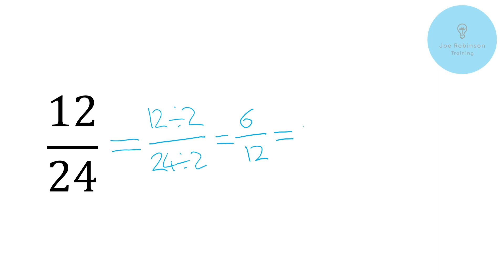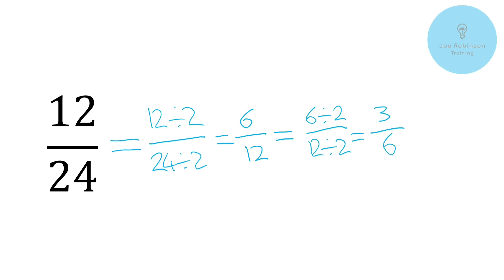And then we can say, can we repeat this process now? Rather than jump to the next number up or trying to find a higher number, ask yourself if that same number will divide into it again. That's a really key point — we keep resetting the process here. So will six divide by two? Yes, it will. And will 12 divide by two? Yes, it will. So let's do that: six divided by two and 12 divided by two. Six divided by two is three, and 12 divided by two is six.